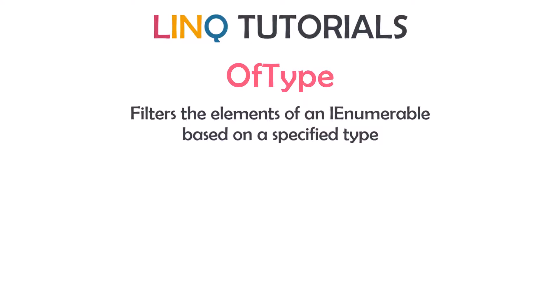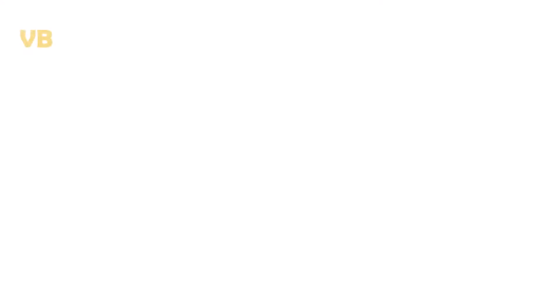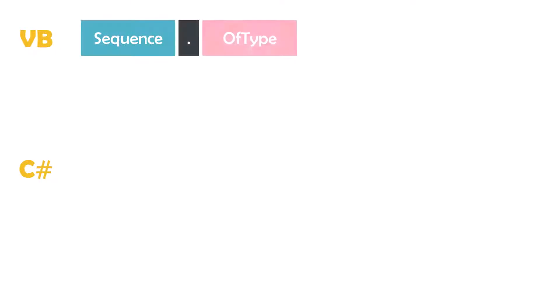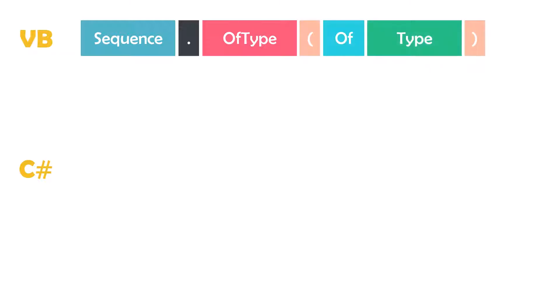Let's see how to write this operator in both Visual Basic and C#. In Visual Basic, we have first the sequence we want to filter, then we set the operator with brackets. Within the brackets, I add the word 'Of' and then the type I'm searching for. For example, to get only string type from the sequence, I set the word 'String'. The result will be an enumerable collection containing only the string elements.